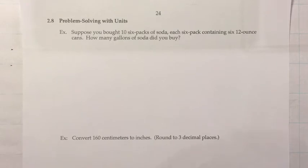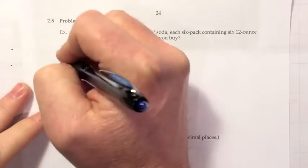So let's start off with the first one. Suppose you bought ten six-packs of soda, each six-pack containing six 12-ounce cans. How many gallons of soda did you buy? I don't know this is a particularly useful conversion, but it does give us practice with a long conversion. So I want to show you how it works.